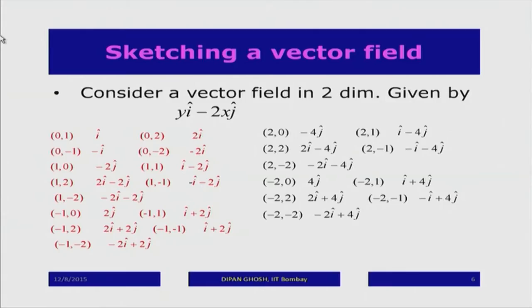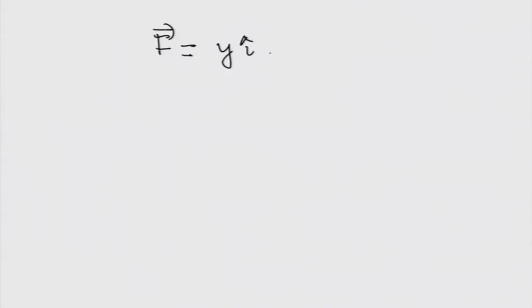Let us look at how one visualizes a vector field. Let me illustrate with an example. Suppose I have a vector field in two dimensions — I am doing it in two dimensions because I can sketch it. Let me take that vector field to be given by: vector F equals y times i minus 2x times j. This is the vector field. Let me see how one visually sketches this.